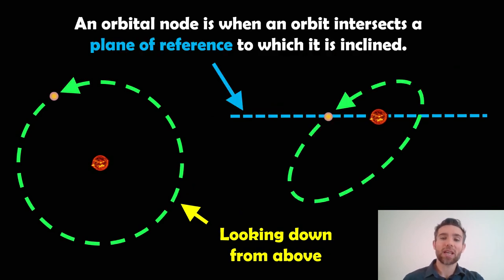During an orbit, if it's inclined, that object is going to intersect the plane of reference twice during an orbit. The locations of those are the orbital nodes. When it goes down, that will be the descending node. And when it goes up through that, that will be the ascending node. The one we're interested in here is the ascending node.